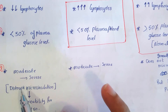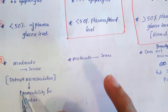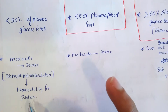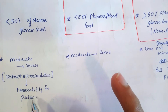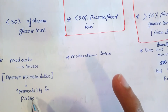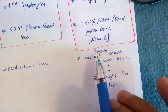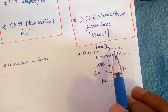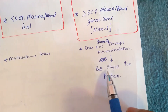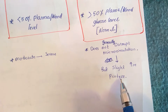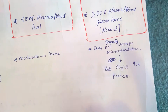Regarding protein levels: in pyogenic meningitis, the level of protein is moderate to severely elevated. This is because bacteria disrupt the microcirculation, which increases the permeability for proteins. There is therefore a high level of proteins in the CSF in pyogenic meningitis, as well as in tuberculosis meningitis. In viral meningitis, microcirculation is generally not disrupted, but there will be a slight elevation of protein level in the CSF.